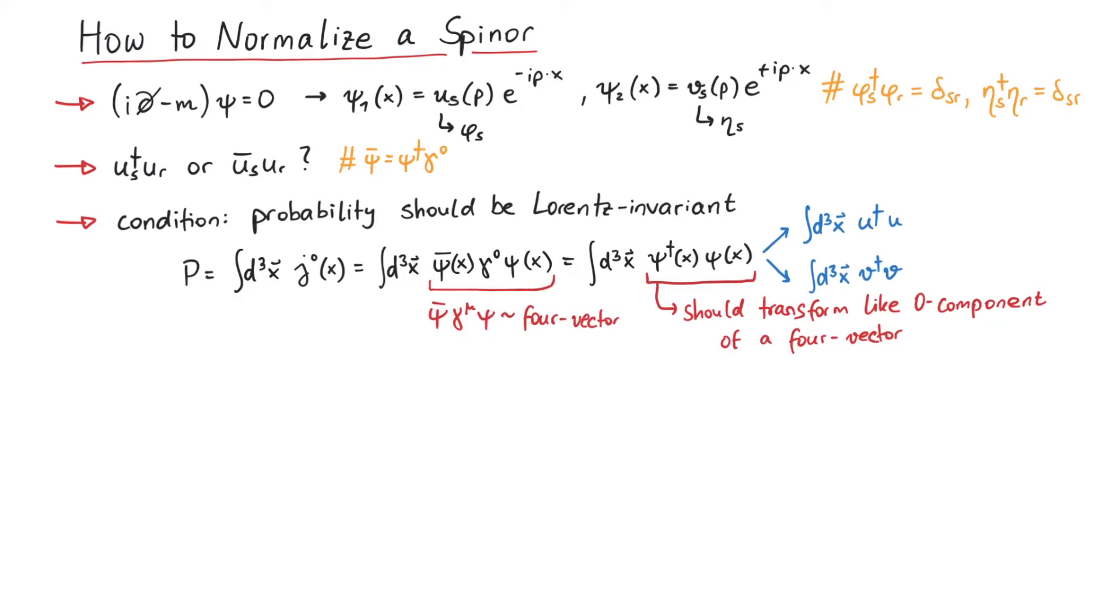Now the only four-vector that appears in the bi-spinor is the four-momentum p. Therefore, psi dagger psi and therefore also u dagger u as well as v dagger v must be proportional to p0, the energy of the particle.